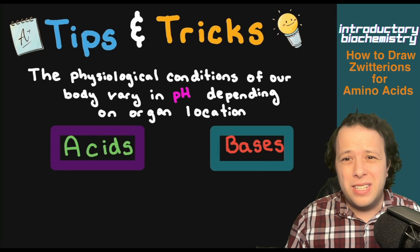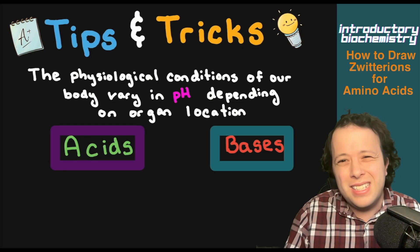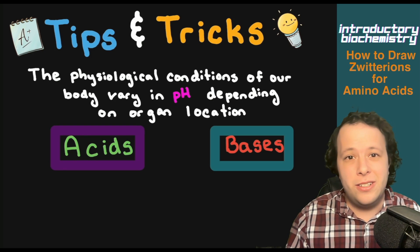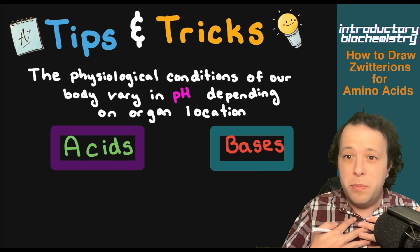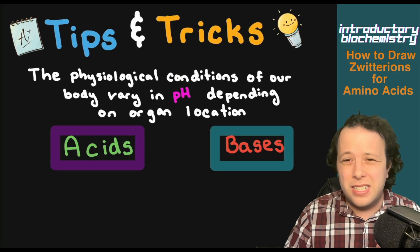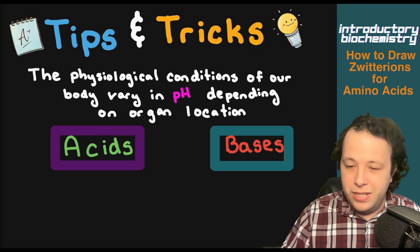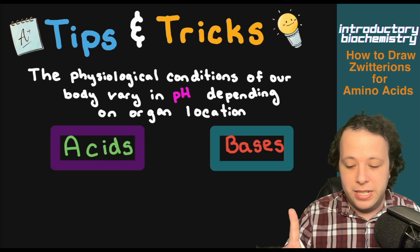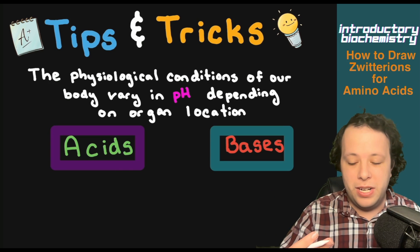These are sometimes the most complicated thing for introductory students to draw because acids and bases are really hard to understand. We have to realize that the physiological conditions of your body vary depending on where we are — every organ has its own unique pH, which breaks down different types of chemicals through metabolism differently. One way to remember how to draw these is to think about how acids and bases behave: acids donate protons, meaning they generally give them away.